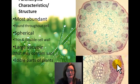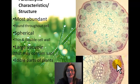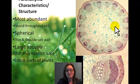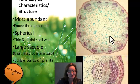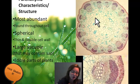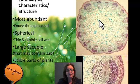The first is parenchyma, and it is the most abundant of the cell types — so when in doubt, it might be parenchyma. It's usually spherical in shape, meaning round like a ball. It has thin and flexible cell walls, partly because it has a large vacuole — like a big sack of water — so it may need to be more flexible to accommodate how much that vacuole will shrink and grow depending on how much water is available.